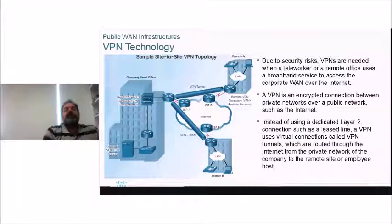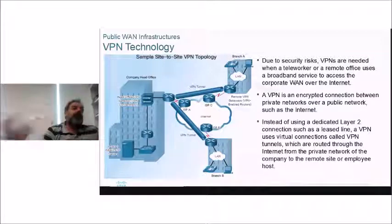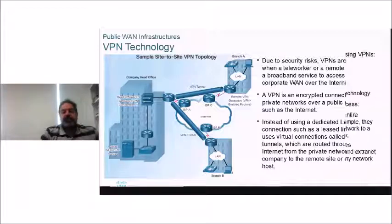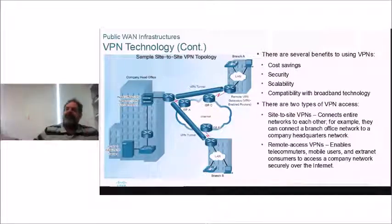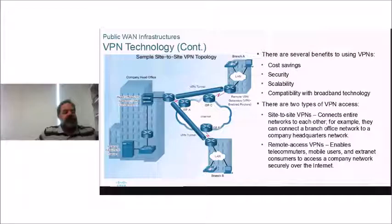VPN (Virtual Private Network) is a way to make public internet connections private using encryption. Instead of using a dedicated layer 2 connection like a leased line, you can use your DSL or internet connection and make it private with a VPN. This saves money, provides security, is scalable, and is compatible with broadband technologies. The two major types are site-to-site VPN — where routers at the main office and branch office encrypt communication between the two sites — and remote access VPN, for small office, home office, or traveling users who connect to a VPN server to access the corporate site securely.